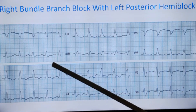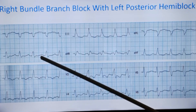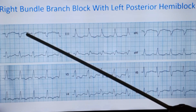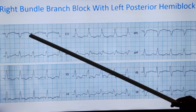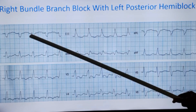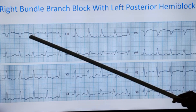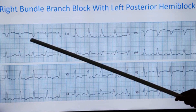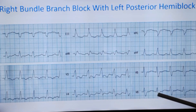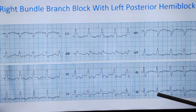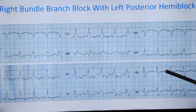This ECG is showing sinus rhythm. You can see P waves — the T and P are almost merging together, but you can see the P wave here. This is the P wave and the PR interval is on the upper limit, almost 200 ms. At one look you can see that the QRS is wide, so there is a conduction disturbance. The QRS is almost 160 ms — four divisions. So it is a wide QRS with the upper limit of normal PR interval, fully in sinus rhythm.